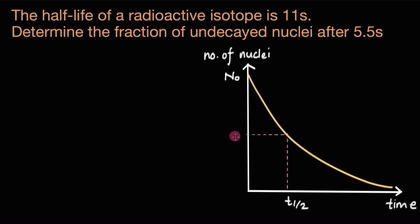And the number of undecayed nuclei, which are still radioactive, are N0 by 2 at this point. If we add one more half-life, then we can see that the number of radioactive nuclei that remain is half of this number, and that is N0 divided by 4. So this is 2 times the half-life.